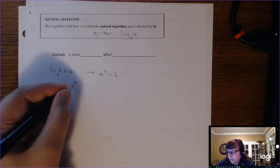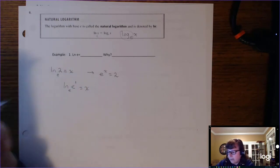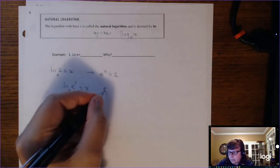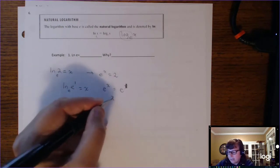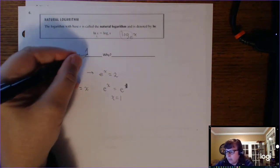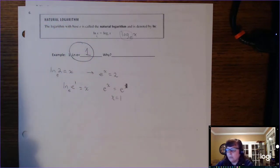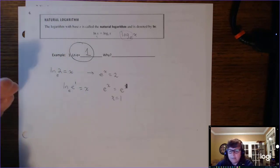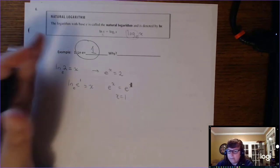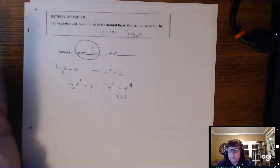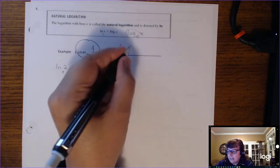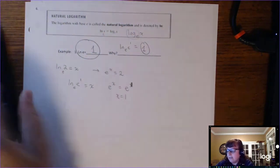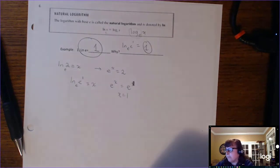The natural log of e: the base is e and there's an understood exponent of 1. If we rewrite in exponential form, e to the x equals e to the 1, so x must equal 1. This leads to an important property: the natural log of e equals 1. We're introducing all the different types of functions and some key properties now, and we'll keep cycling back and building on them throughout the semester.